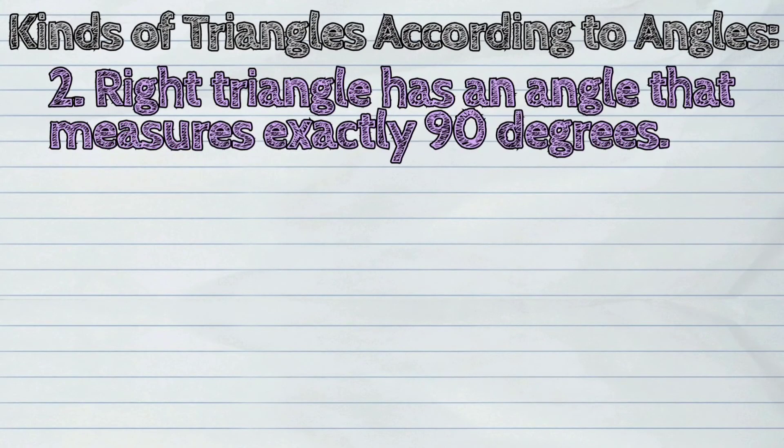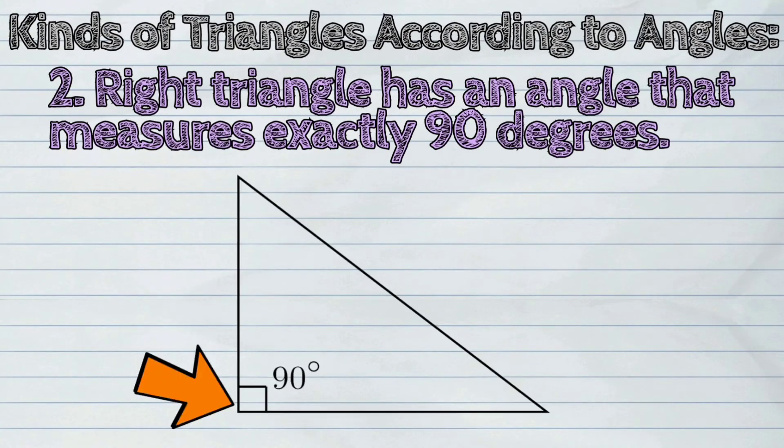Right triangle has an angle that measures exactly 90 degrees.